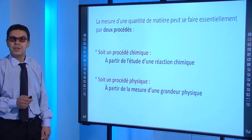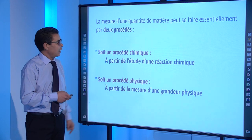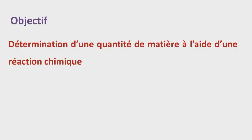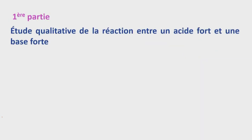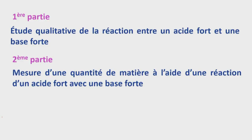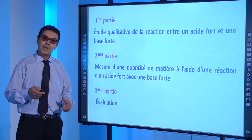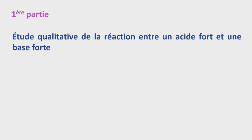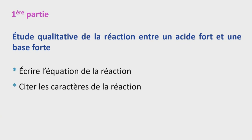Cette séance s'intéresse essentiellement aux procédés chimiques et a pour objectif la détermination d'une quantité de matière à l'aide d'une réaction chimique. Pour ce faire, nous allons commencer par une étude qualitative de la réaction entre un acide fort et une base forte. Ensuite, nous allons procéder à la mesure d'une quantité de matière à l'aide d'une réaction d'un acide fort avec une base forte. Nous terminerons par une évaluation portant sur ce chapitre.